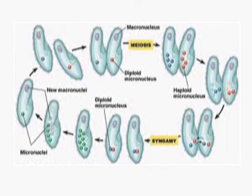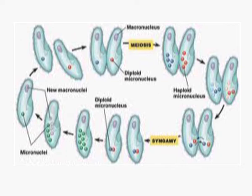Sexual reproduction is also found in some protoctistans — for example, in Paramecium, which reproduces by conjugation. Two Paramecia come close together and a protoplasmic bridge is formed between them, as you can see in the diagram. Exchange of genetic material takes place through this protoplasmic bridge — genetic material moves from one Paramecium to the other and vice versa.